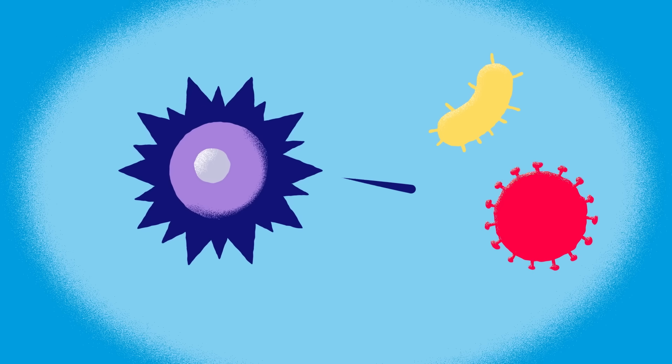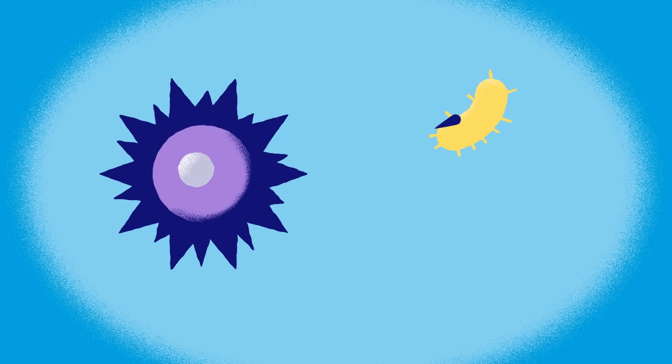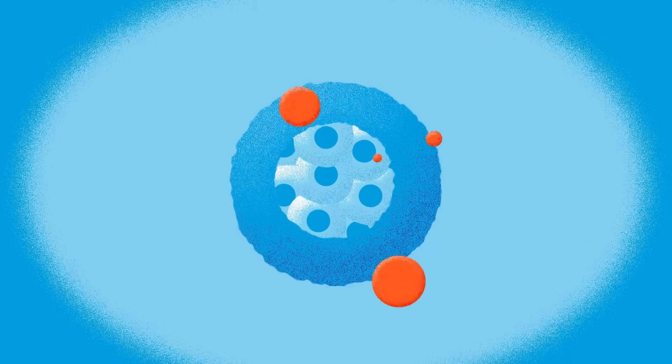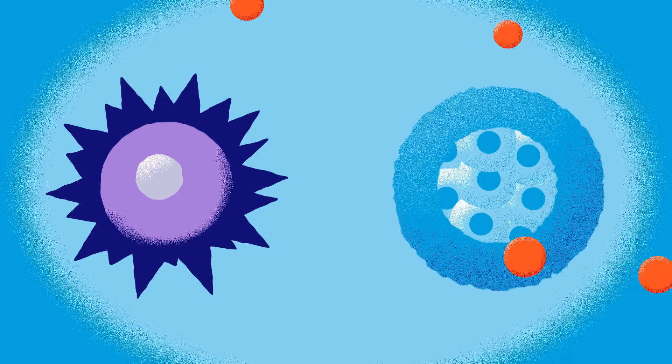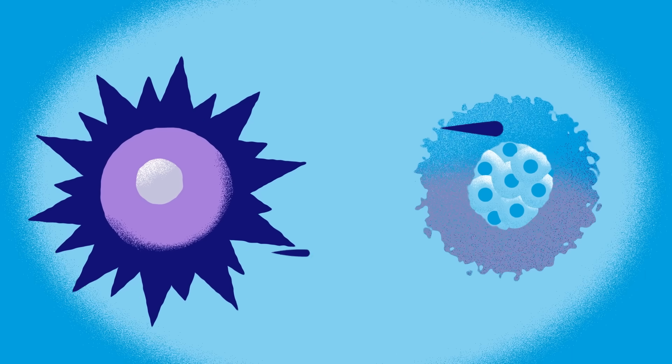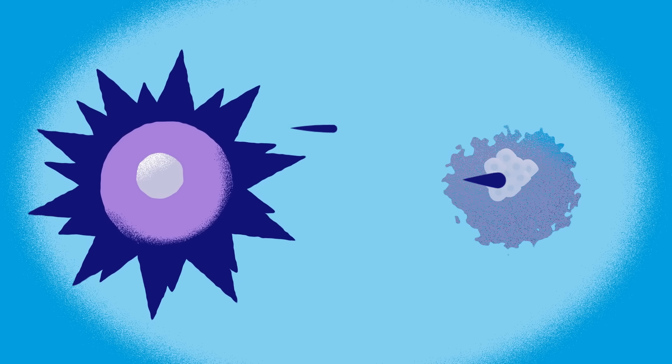Our immune system has the job of protecting us against infections, but if you have type 1 diabetes, your immune system mistakenly thinks the cells in your pancreas that make insulin are the enemy and attacks and destroys them.